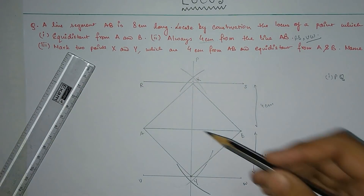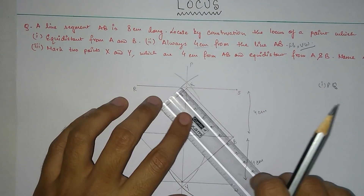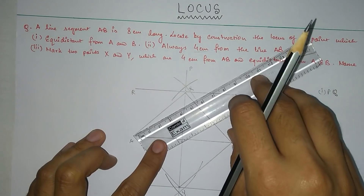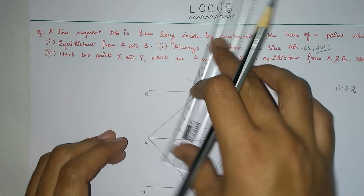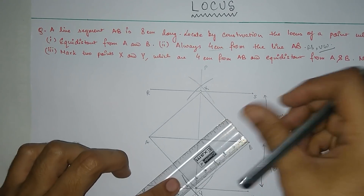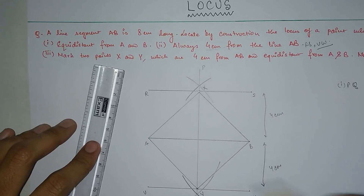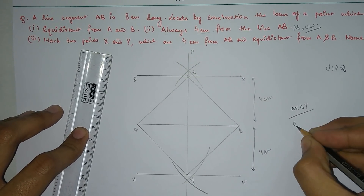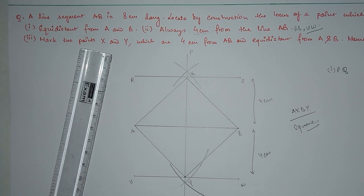The figure we get is a square. Checking the side lengths: each side measures 5.6 cm. Since all four sides are equal at 5.6 cm, the figure AXBY is a square. Now we move on to the next question.